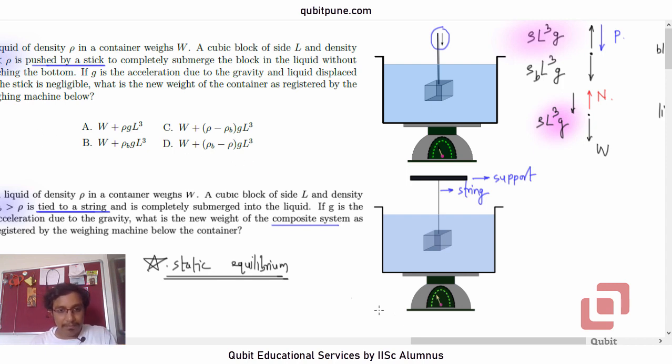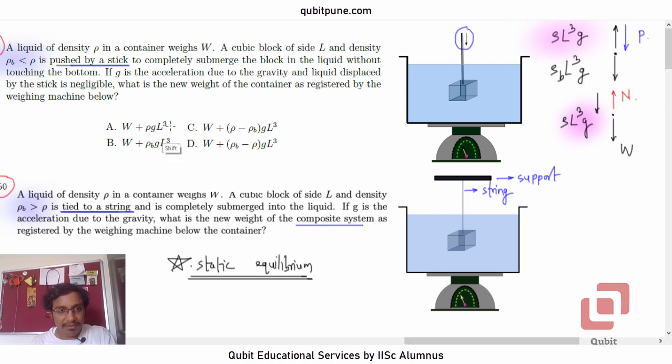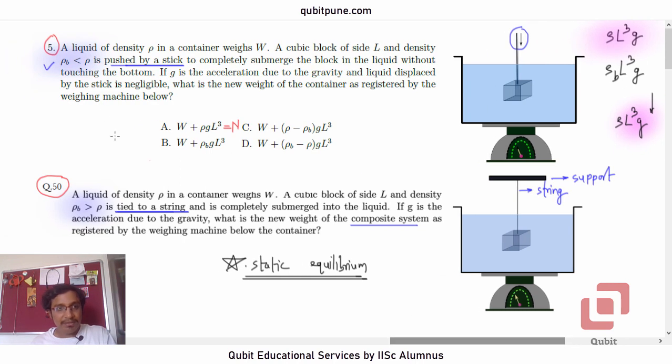So do we have that as our option? Yes, that's option A. This is N, right? If we consider the vertical equilibrium of liquid, N is equal to ρ L³ g plus W. So as far as question 5 is concerned, the correct option is A.